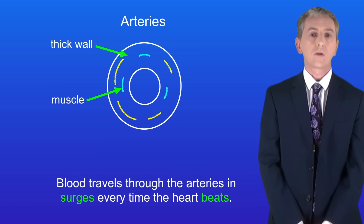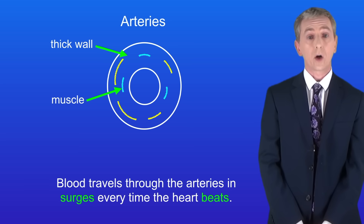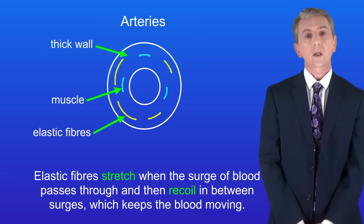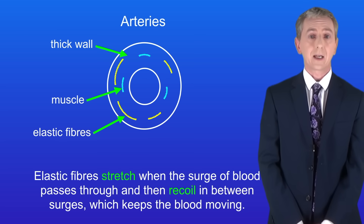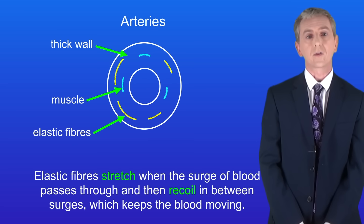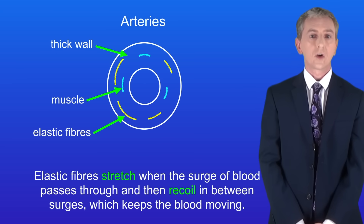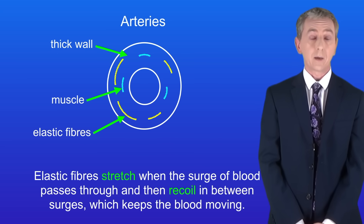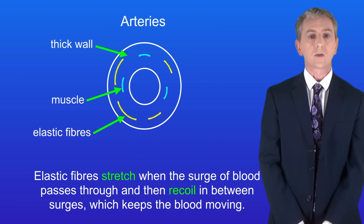Blood travels through the arteries and surges every time the heart beats. That surge can be felt in the wrist as your pulse. To cope with that, arteries contain elastic fibers. These stretch when the surge of blood passes through and then they recoil in between the surges, which keeps the blood moving.